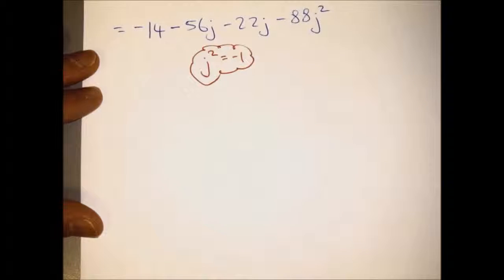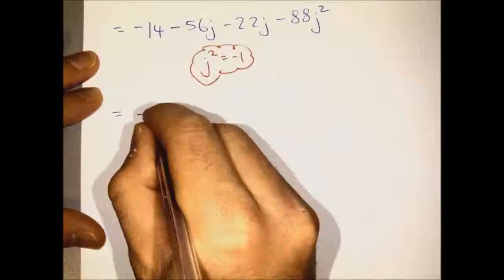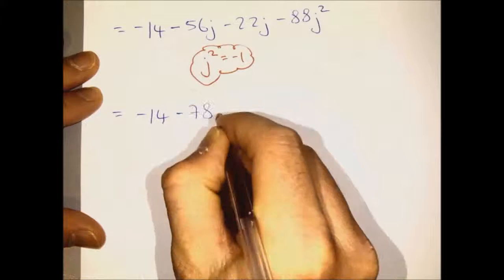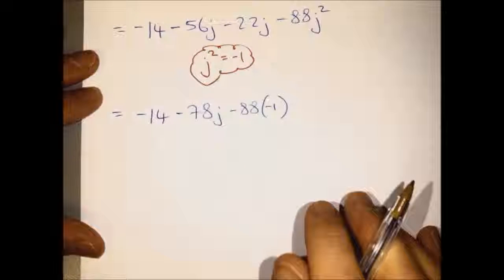The trick here is to realize that J squared is actually minus 1. So we can replace J squared with minus 1 and then tidy up.